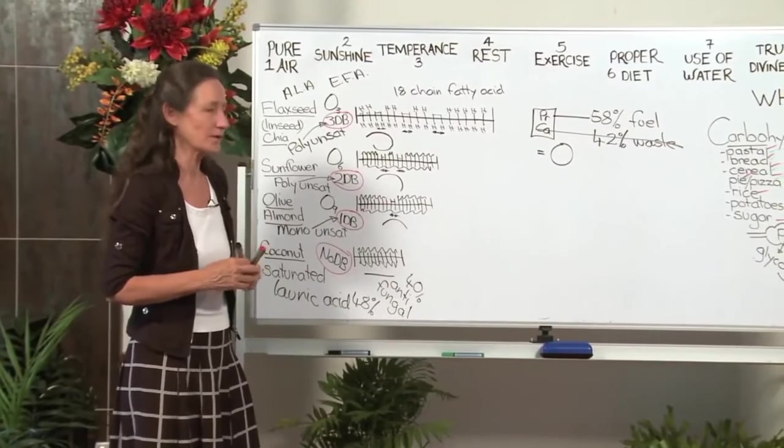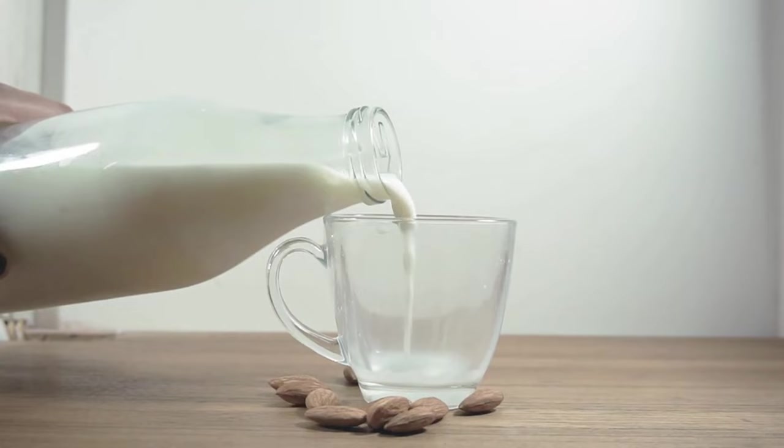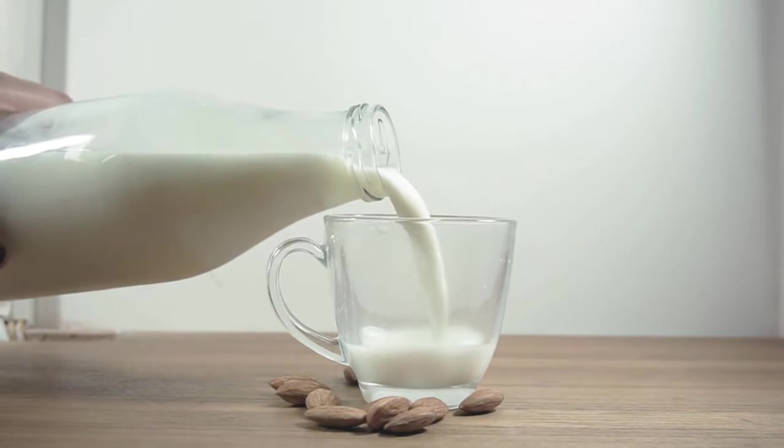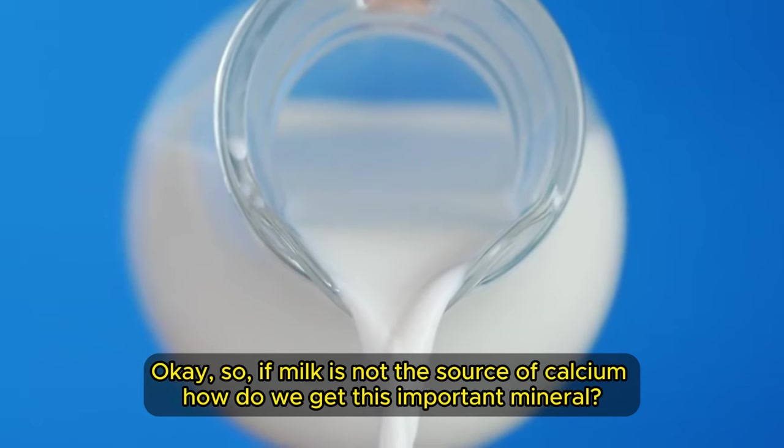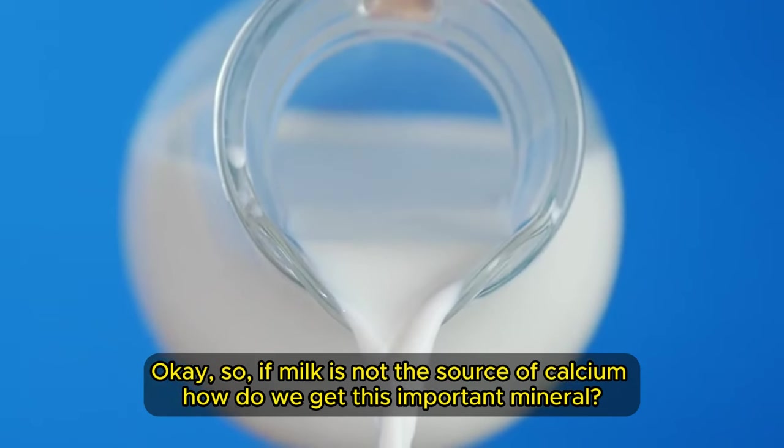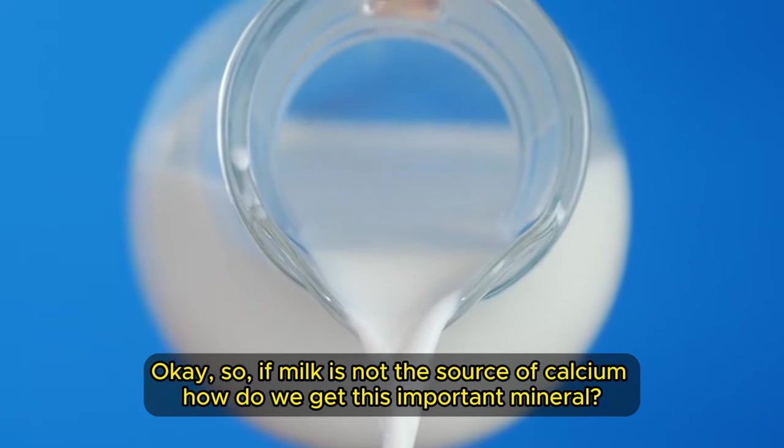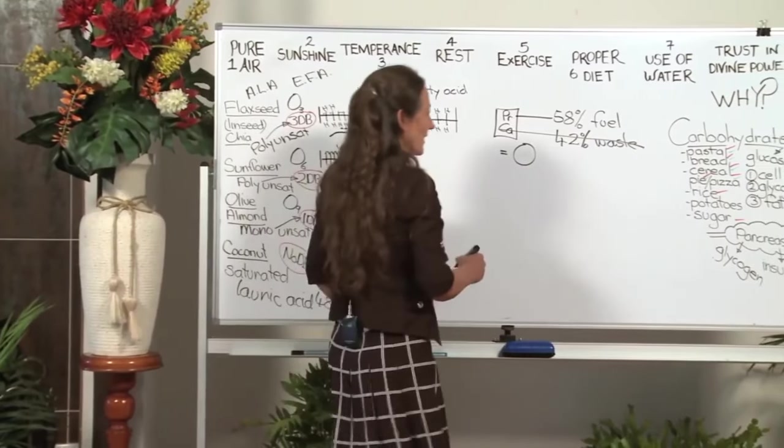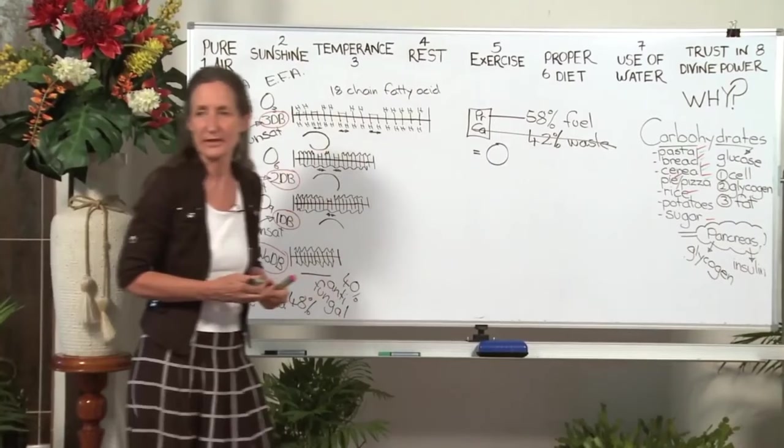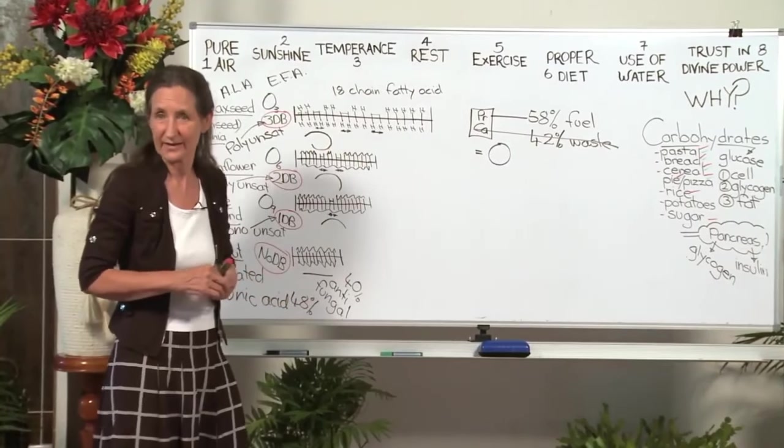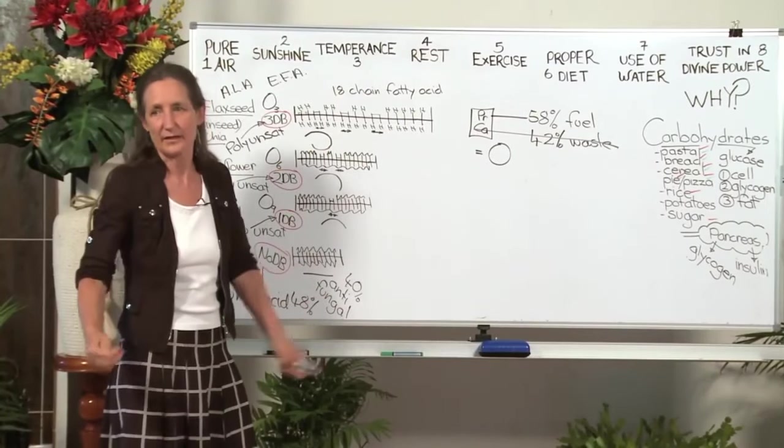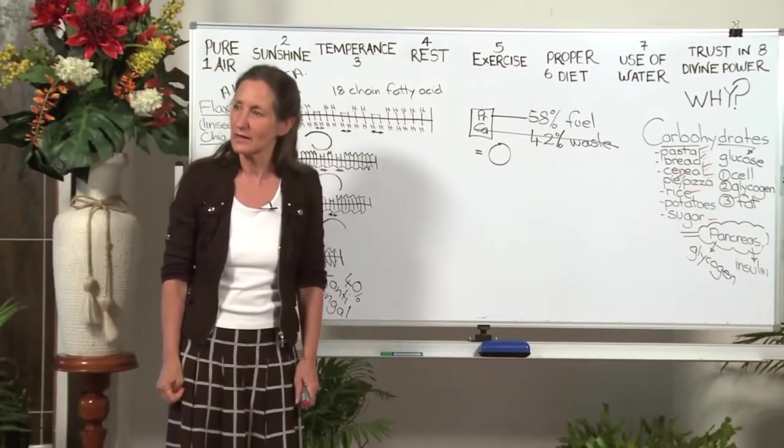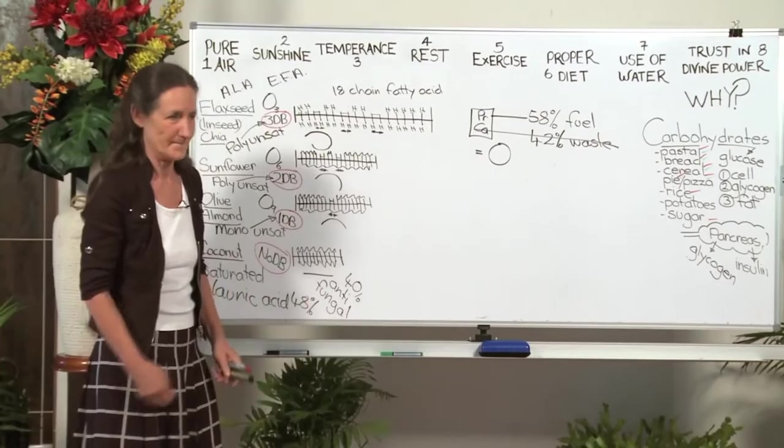In fact, the countries in this world that are consuming the highest amounts of dairy products have the highest incidence of osteoporosis. So if milk is not the source of calcium, how do we get this important mineral? We will get our calcium from the same place the biggest bone creatures on the planet get their calcium from. Where does the elephant get its calcium from? Greens.